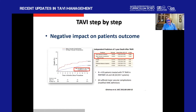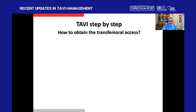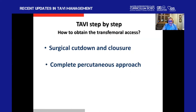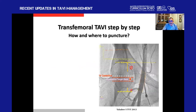Data from the PARTNER trial shows patients with vascular complications had almost twice the death rate at 12 months compared to those without. As has been said at TCT meetings, TAVI is like 80% peripheral and only 20% cardiac. To obtain transfemoral access safely, you can do surgical cut-down and closure, but interventional cardiologists prefer the complete percutaneous approach, guided by ultrasound or angiography. Many centers have completely switched from angio to ultrasound guidance with fantastic results.